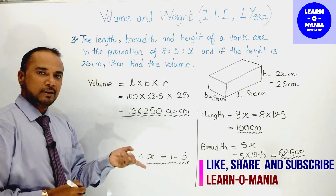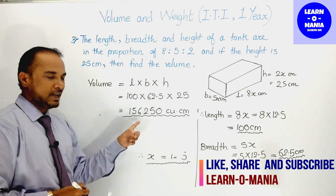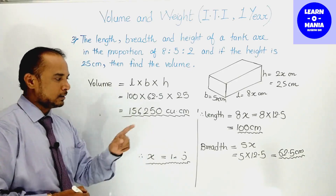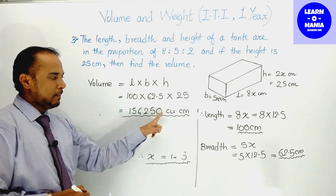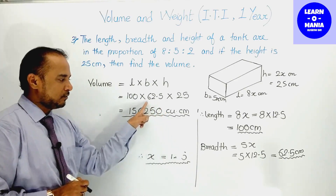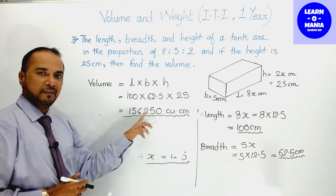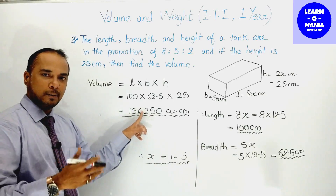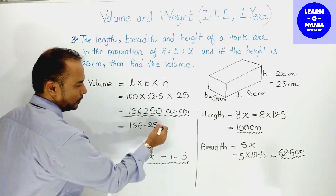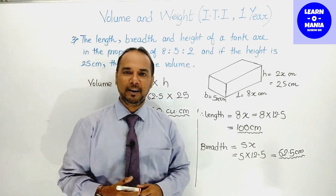अगर volume आपको liters में चाहिए: cubic cm को liters में convert करने के लिए इसे orally 1000 से divide करो। Decimal point end में है, तो three places shift होगी। Liters में answer होगा 156.25 liters।